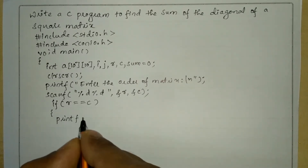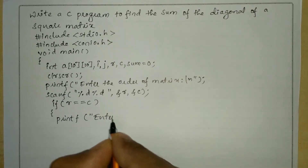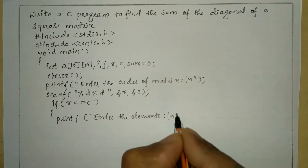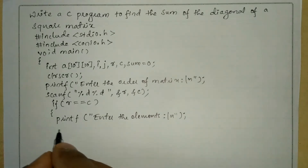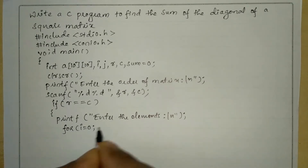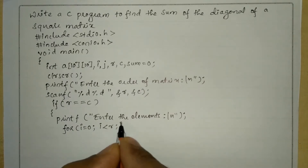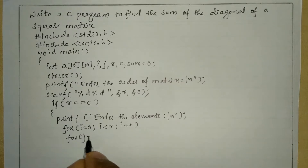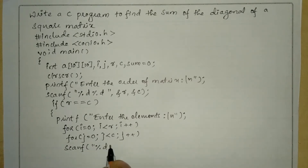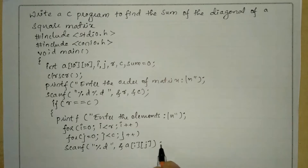If this condition is true, the body of the if statement gets executed. We write a printf statement asking the user to enter the elements, followed by backslash n. We then allow the user to insert elements using nested for loops: for i equal to 0, i less than r, i plus plus; and for j equal to 0, j less than column, j plus plus. Inside the loop we use scanf with format specifier %d and ampersand a of i and j.